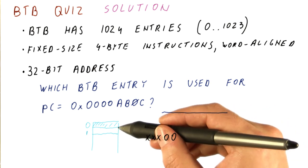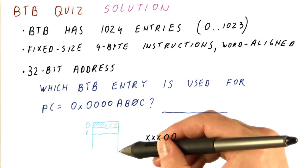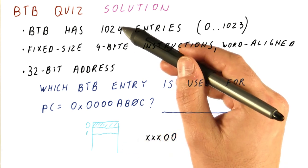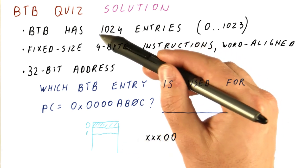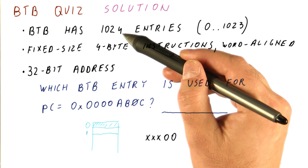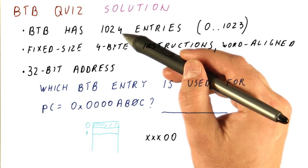That means we are really using only every fourth entry in our BTB. Of the 1,024 entry BTB, we are really using only 256 entries, which is a huge waste.